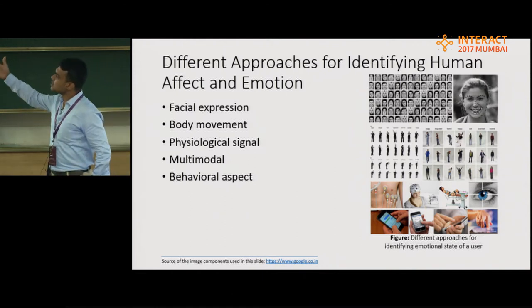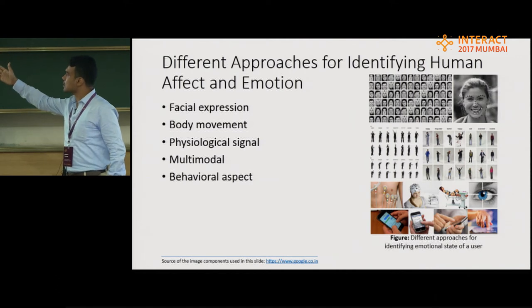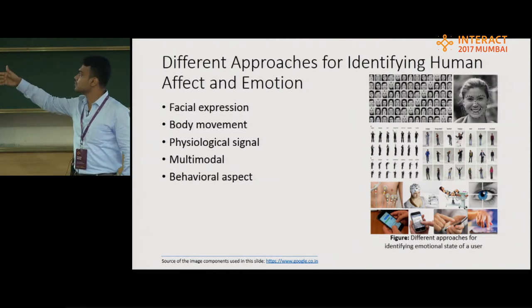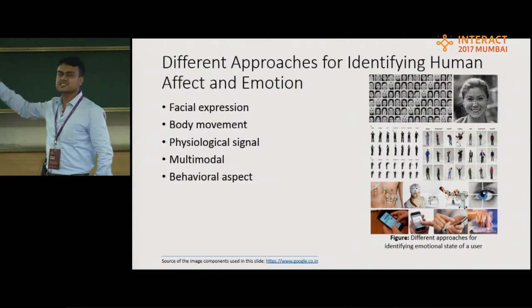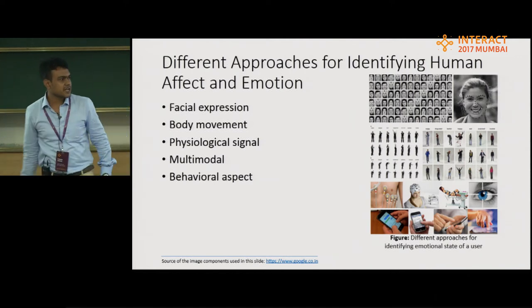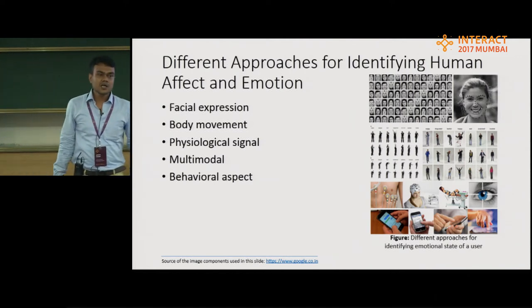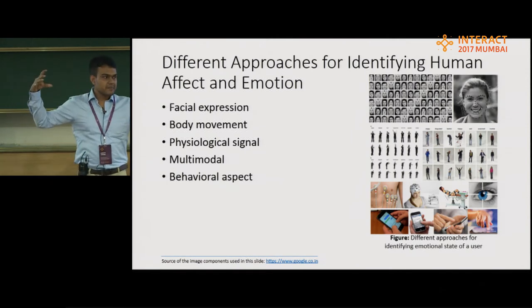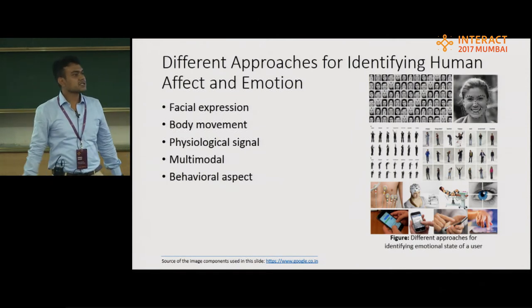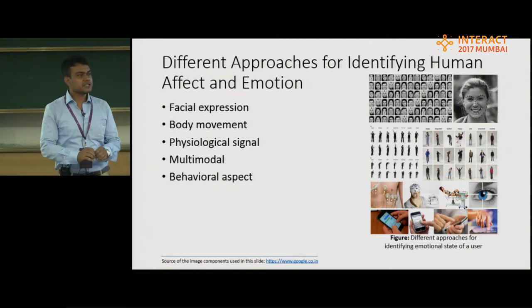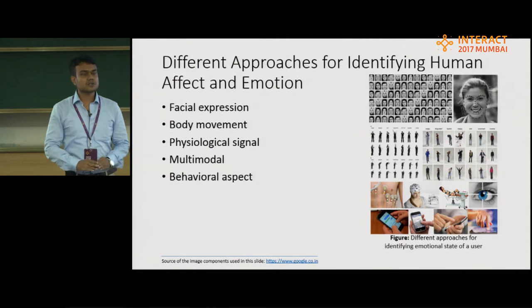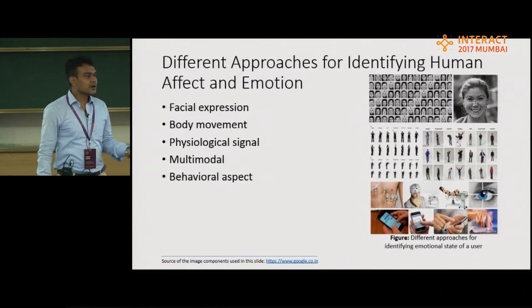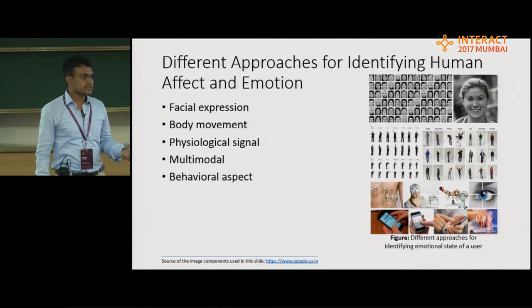Secondly, we can also identify emotional state using body movement like gesture and posture. Again, a lot of setup — cameras, probes, this kind of things — are required. So that is also not applicable in case of mobile interaction design.